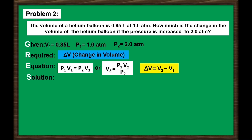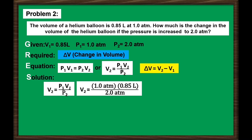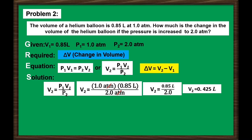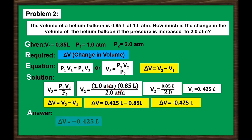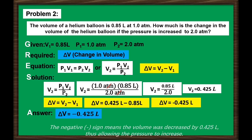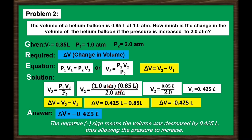For our solution, we use Boyle's Law: 1.0 atm × 0.85 liters ÷ 2.0 atm — canceling the unit atmosphere — giving a final volume of 0.425 liters. Now we get the change in volume: 0.425 liters minus 0.85 liters equals negative 0.425 liters. The negative sign means the volume decreased by 0.425 liters, thus allowing the pressure to increase.